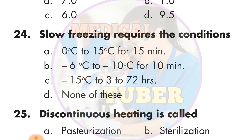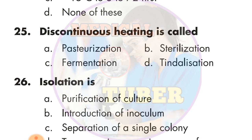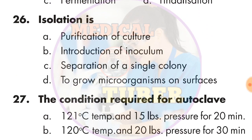Question number 24: Slow freezing requires conditions of minus 115 degrees Celsius for 3 to 72 hours. Question number 25: Discontinuous heating is called — the answer is D — tyndallization.